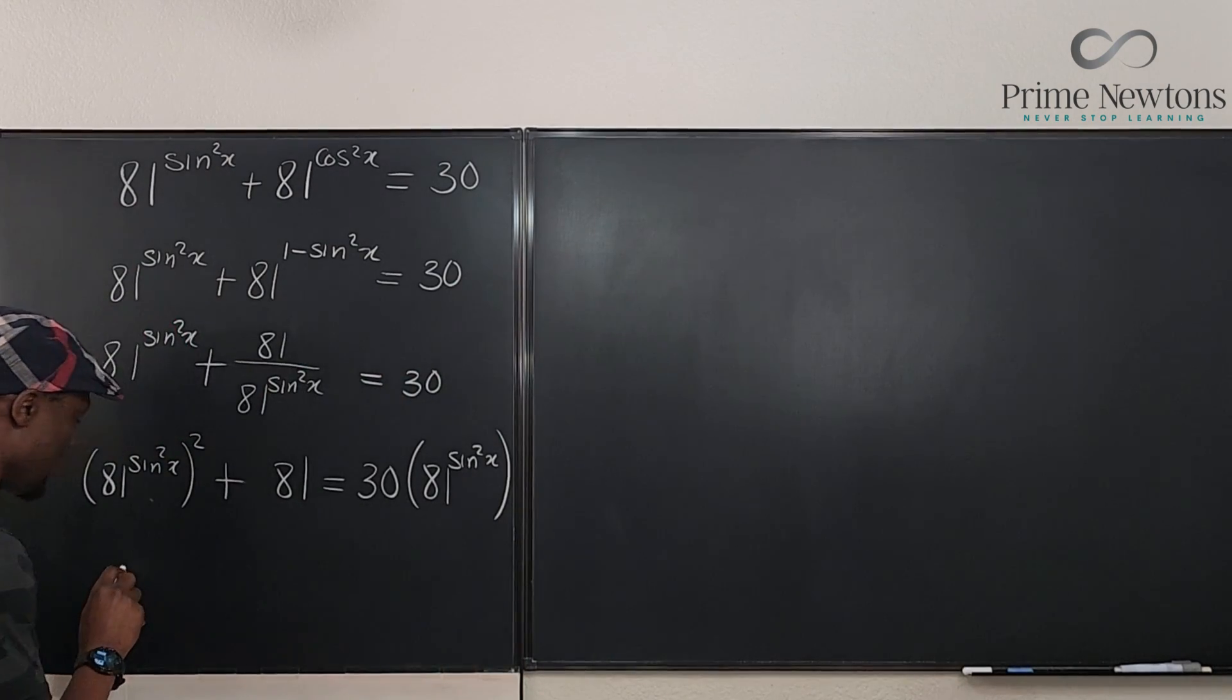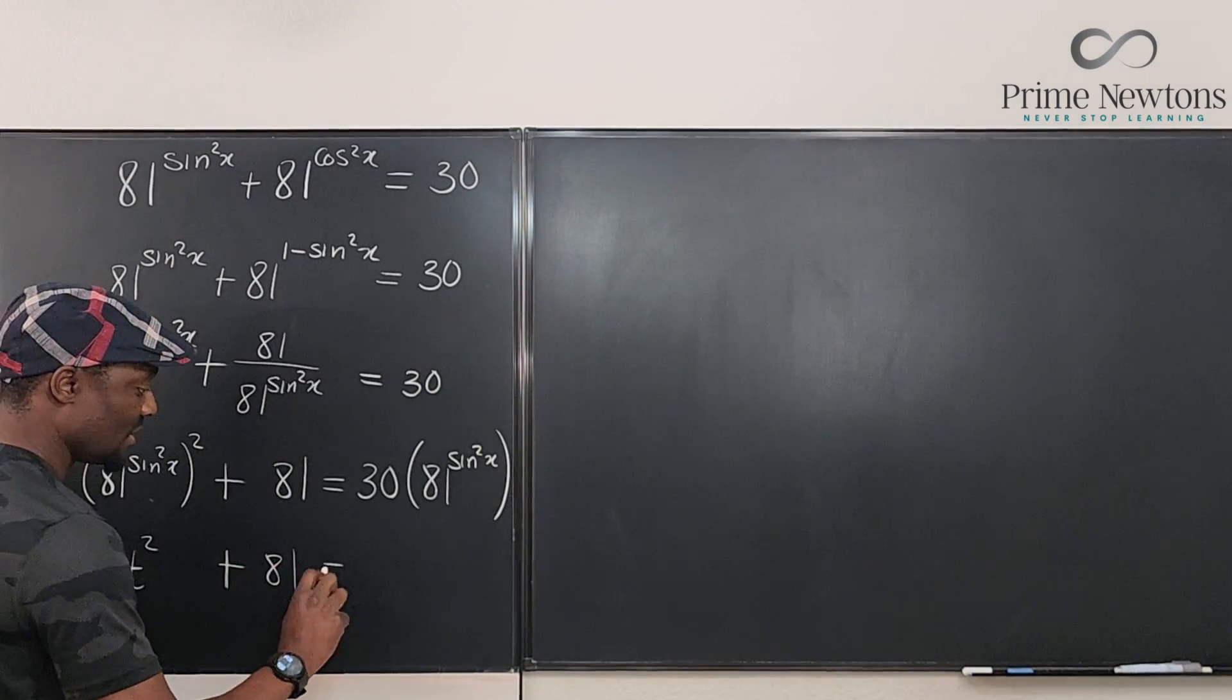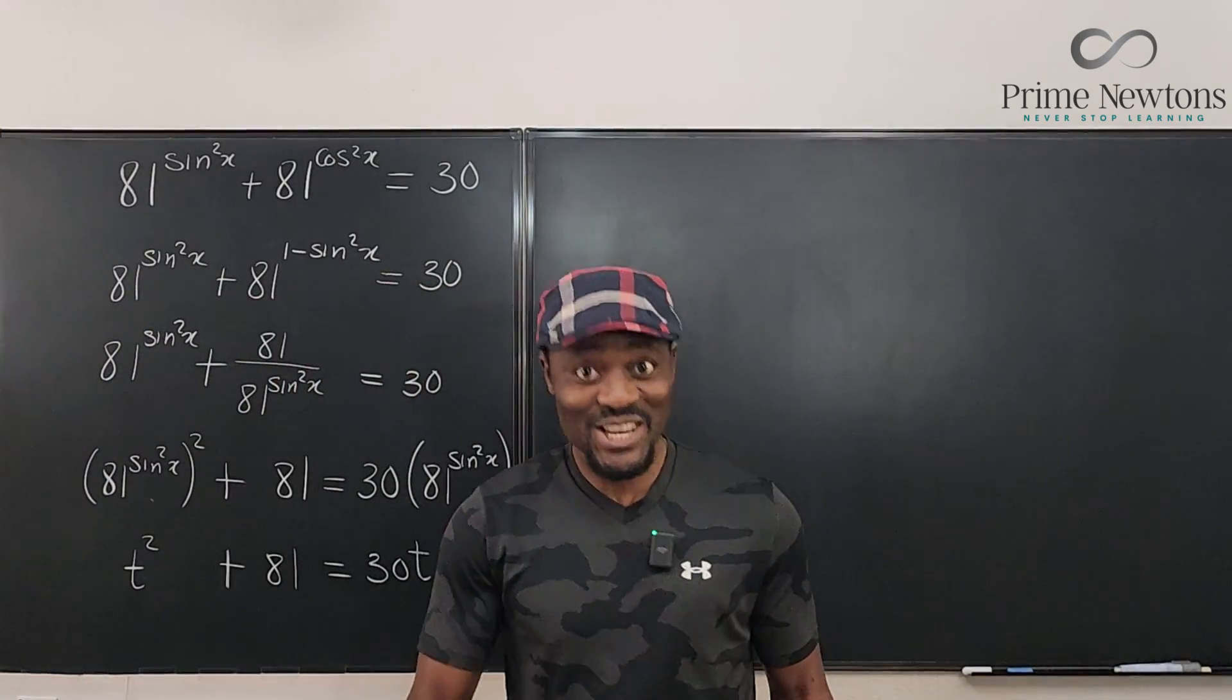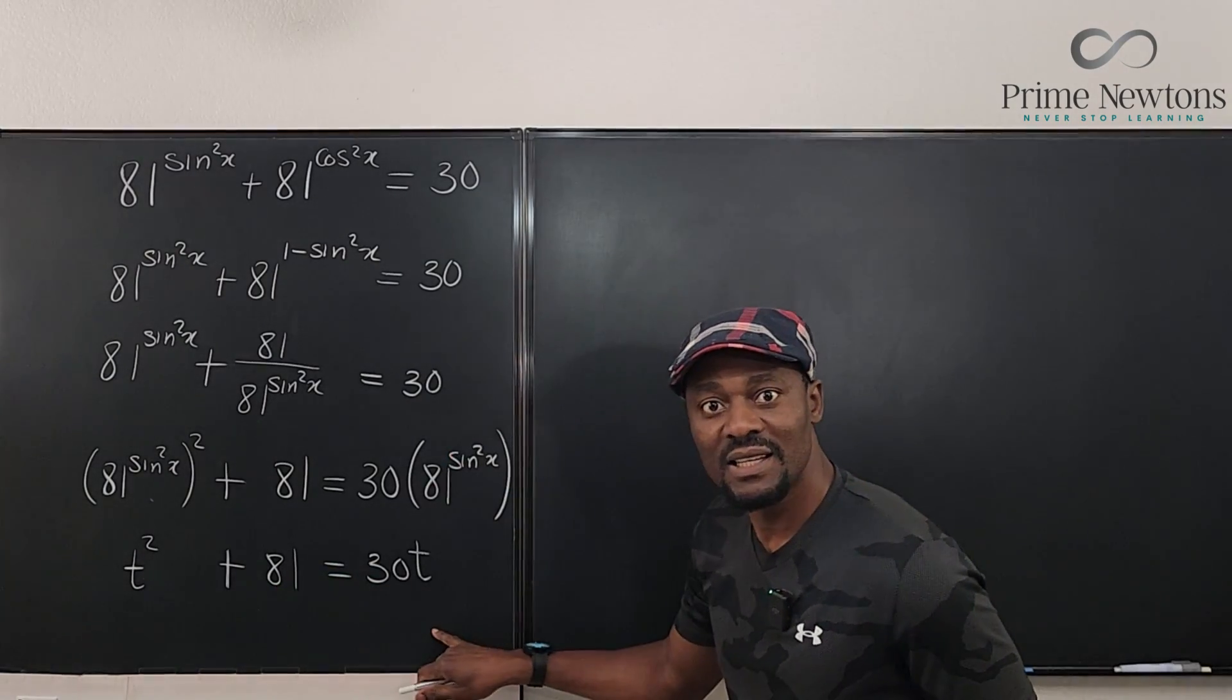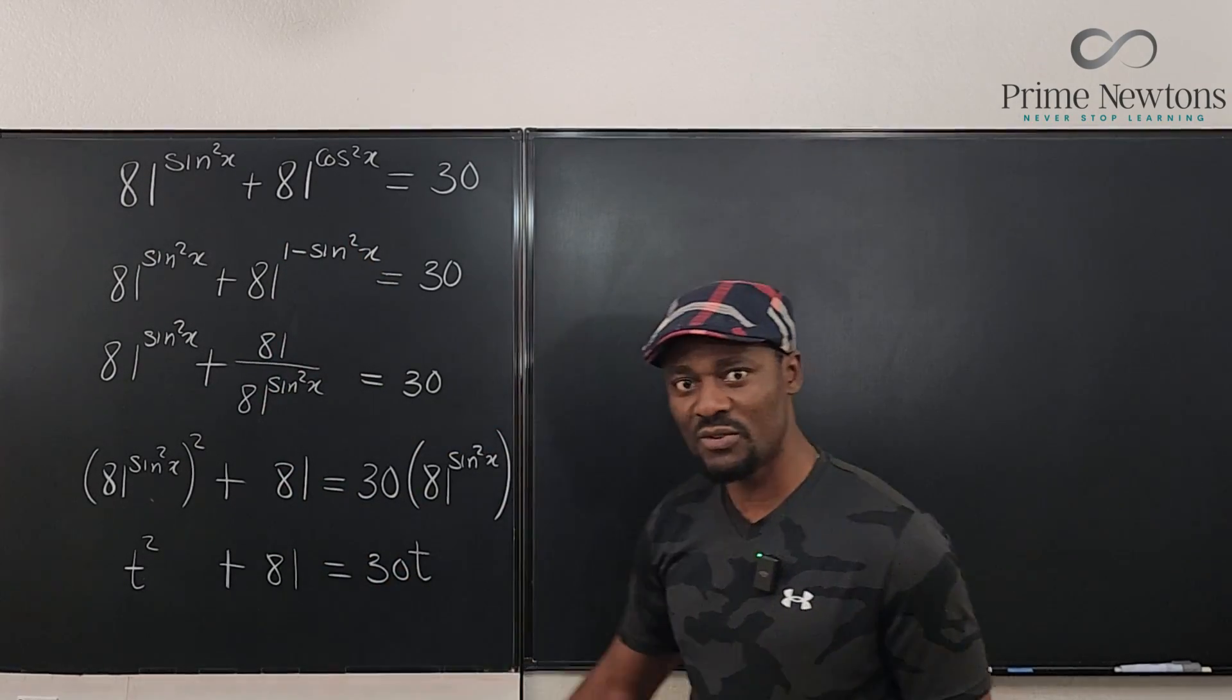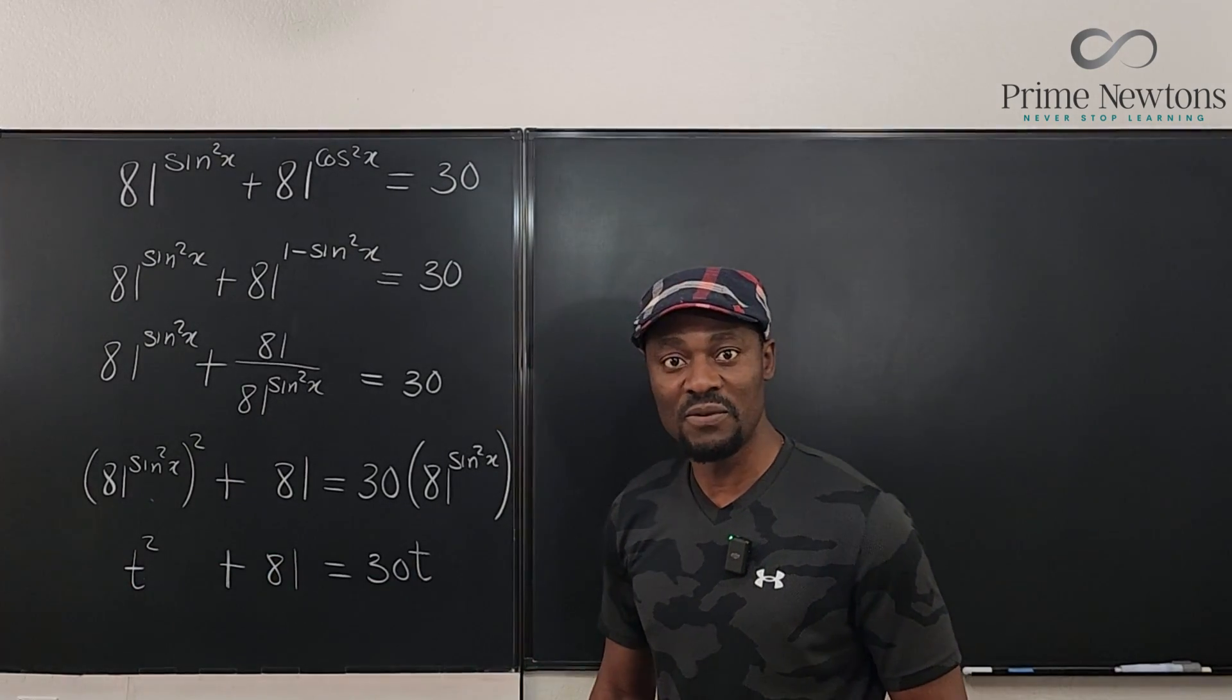I have a simple equation here. t squared. So this is my t now. Plus 81 is equal to 30t. Life is beautiful. Don't you think so too? You see that what looks very complicated a while ago has become so simple. Can you solve this quadratic equation? Absolutely, you can solve it. And as soon as you know what t is, you come back here and solve for this.